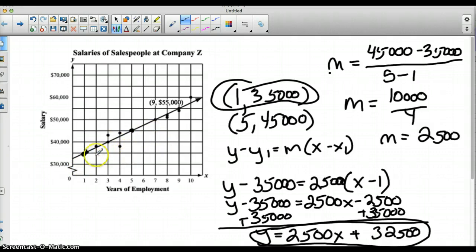So basically my salary is increasing by $2,500 for every single year of employment, is essentially what that slope means. So my salary increases $2,500 for every single year that I'm employed by the company.